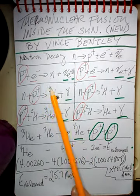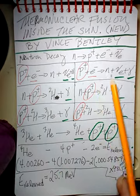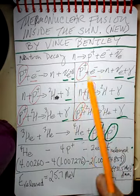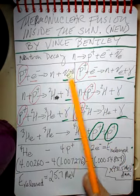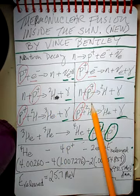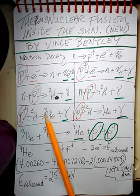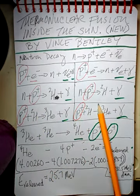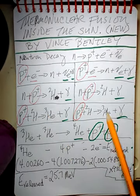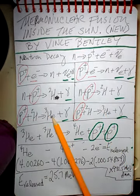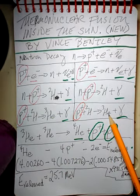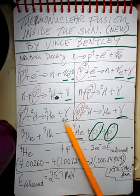While all of this is going on, the same reactions are happening nearby — there are millions and millions of these reactions going on. I simply repeated each of these steps to show that there's another reaction going on right next door. This is important because we're going to take these two helium-3 isotopes created in the core of the Sun and fuse them together.